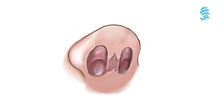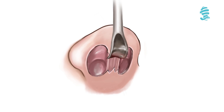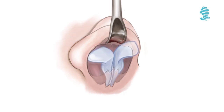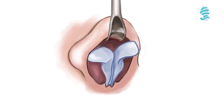With tip exposure by the external approach, the lateral crura, the domes, and the medial crura can all be seen without any distortion as a single unit.